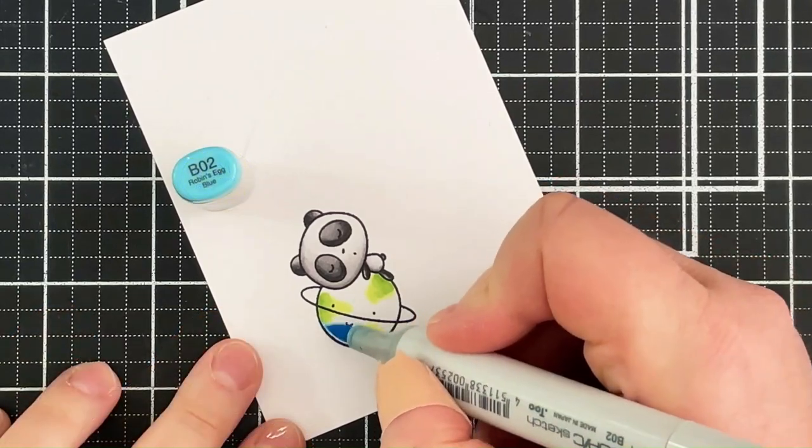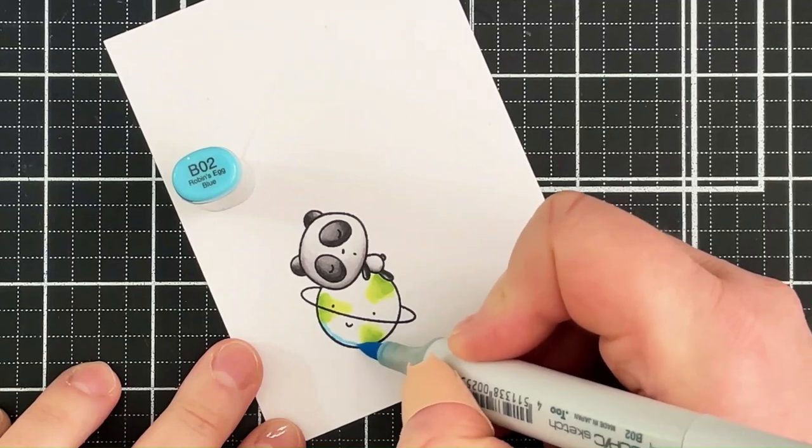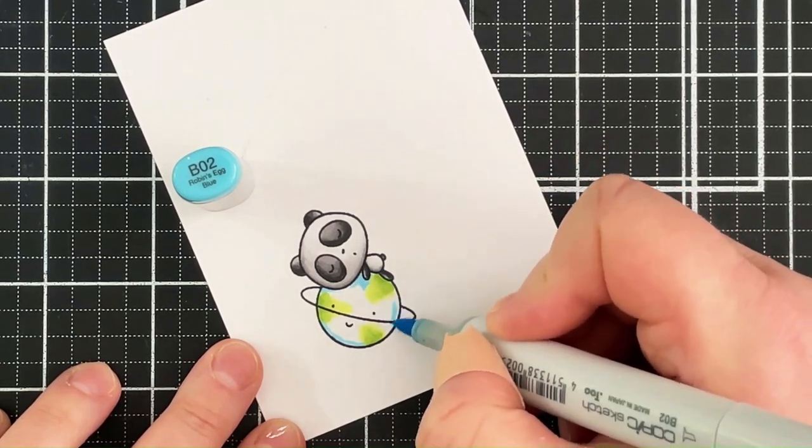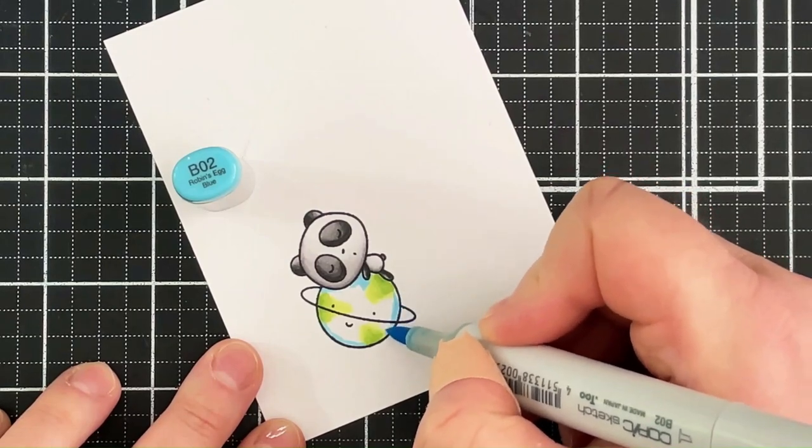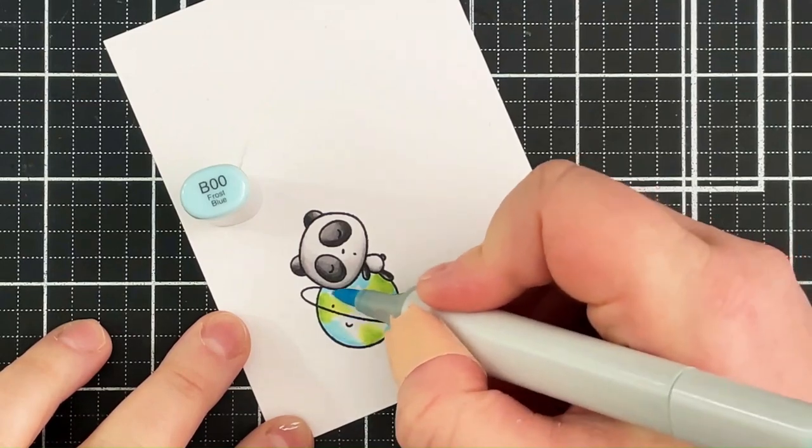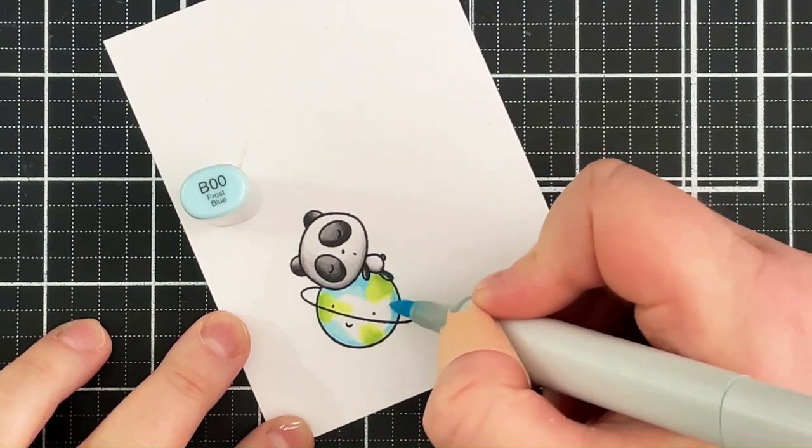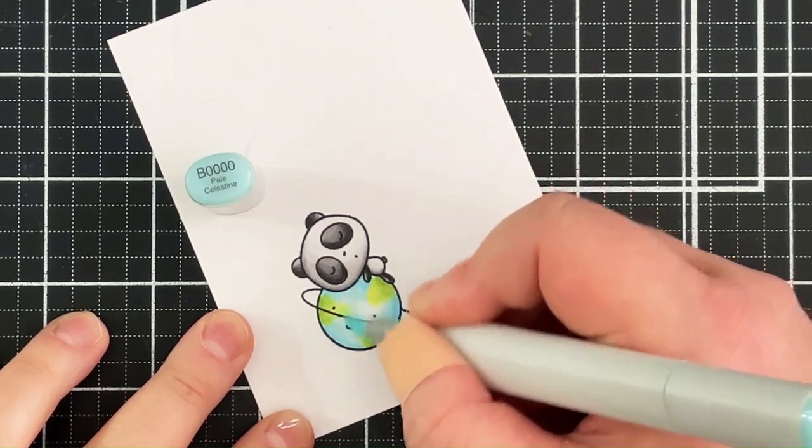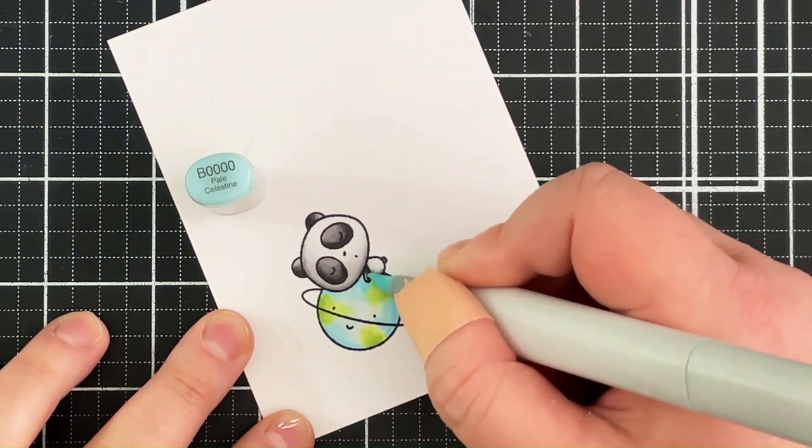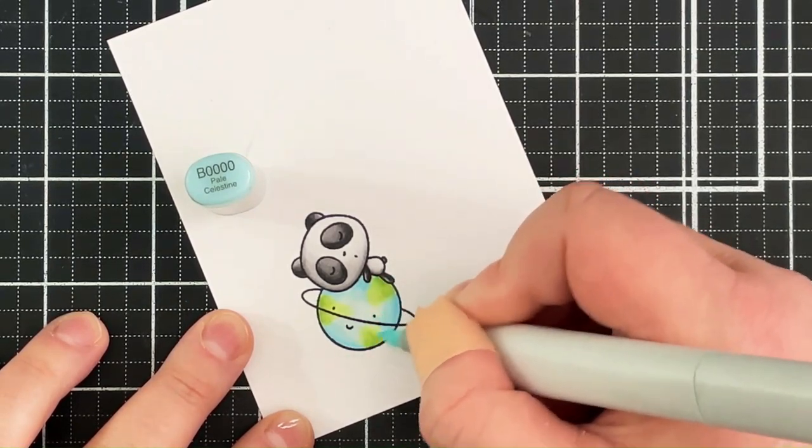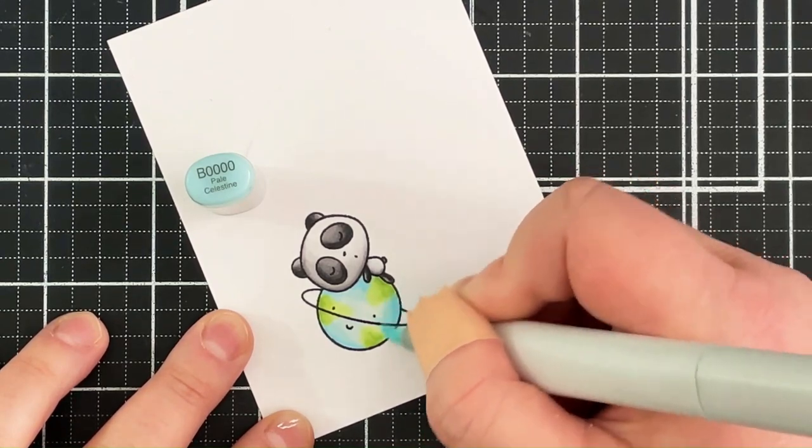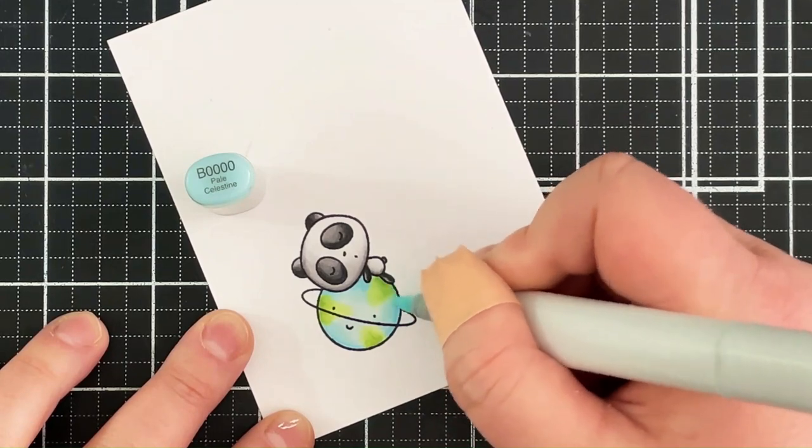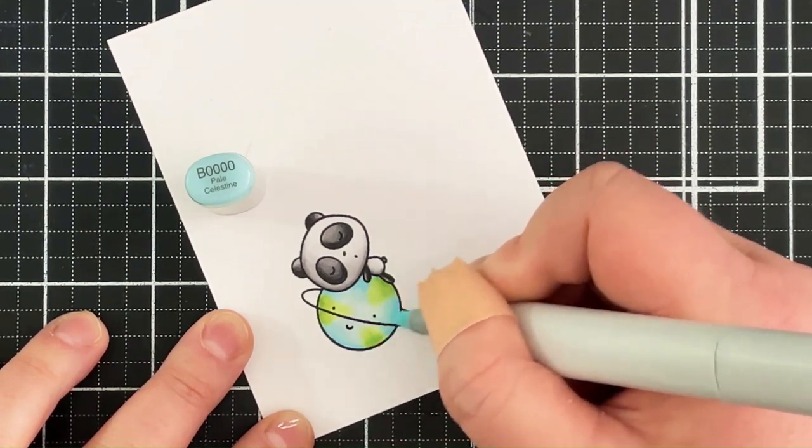And then for the ocean or the sea part I'm starting off with my darkest shade which is B02 and I'm mainly just going around the edges with that. I can then blend it out with the B00, and then I can go in with the B000. I'm actually just going over pretty much the entire portion of this image here because I want some of the land to kind of blend into the sea a little bit. I don't want too harsh of a line, so that B000 is just going to fade it out a little bit so it's not so harsh.